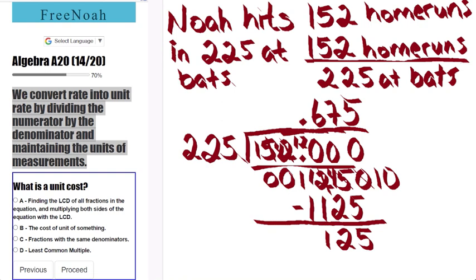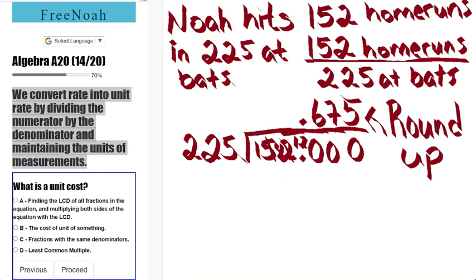At this point now, we can just simply round up because we can notice that there's just going to be a sequence of 5 here. So our quotient here is 0.675.